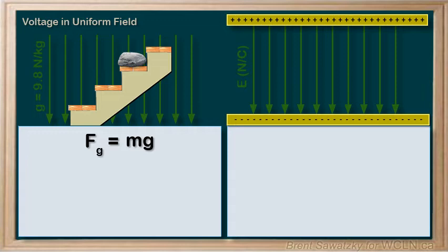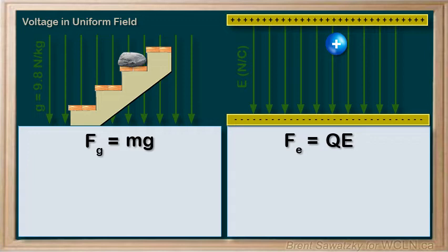We consider our field strength to be uniform, and the units would be newtons per coulomb. Let's put a positively charged particle right in here. Given our uniform electric field, we know that we can determine the electrostatic force on this particle: q times e — the charge of our particle times the electric field strength e.